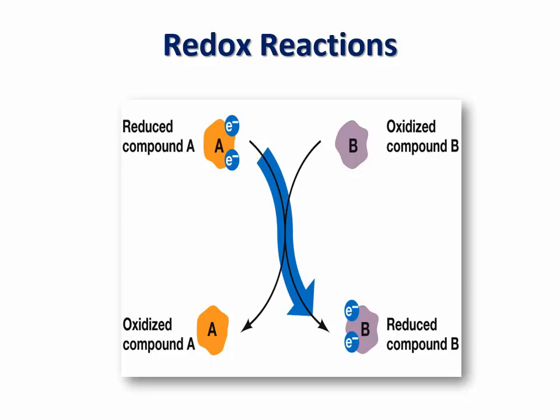Cells use redox reactions to extract free energy from nutrients that consist of reduced chemical compounds. But what is a redox reaction? In a redox reaction, the energy of electrons is transferred between reactants. The reactant whose atoms gain electrons becomes reduced, while the reactant whose atoms lose electrons is said to become oxidized. In other words, whenever one material is reduced, another is oxidized.